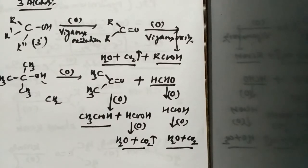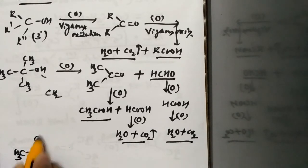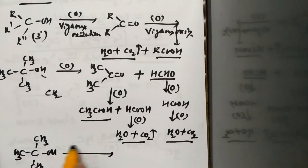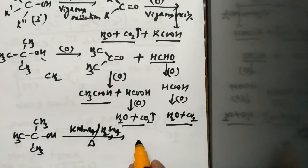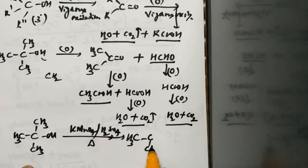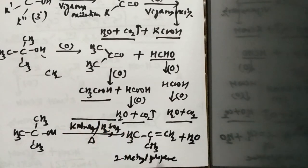There is one more different method of oxidation for tertiary alcohols. If the same tertiary alcohol is subjected to oxidation in the presence of acidified KMnO₄, water is eliminated and we get 2-methylpropene as the major product along with the elimination of water molecule when acidified KMnO₄ is used as the oxidizing agent.